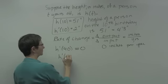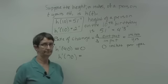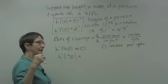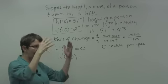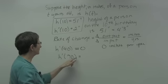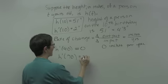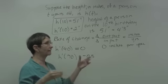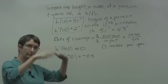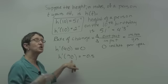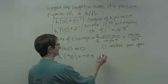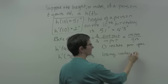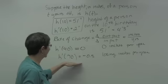What about h prime of 70? By age 70, the spine may be compressed and you may be beginning to shrink, so this could be around negative 0.5 or even negative 1 inch per year, depending on the individual. The rate of change in height at age 70 is likely a negative number, meaning losing inches per year.